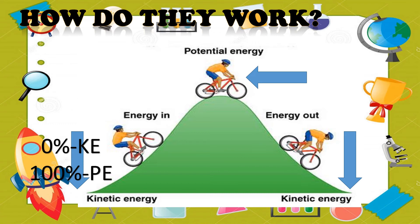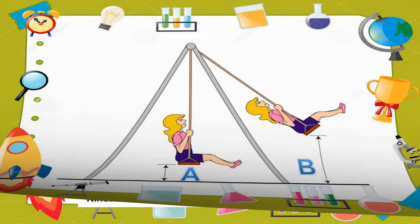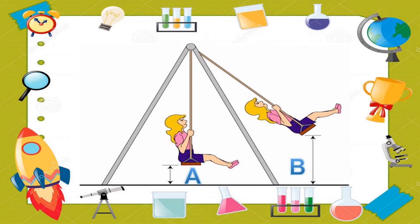But as the cyclist pedals its bicycle, it gradually loses its potential energy and turns into kinetic energy. Try to remember that the total amount of potential and kinetic energy is constant at 100%.